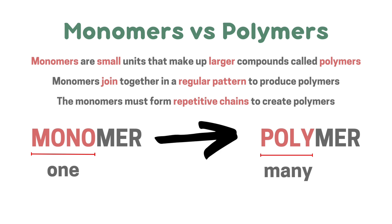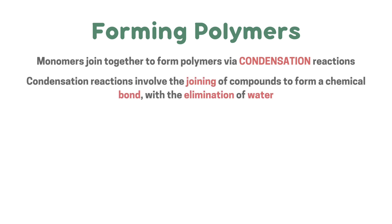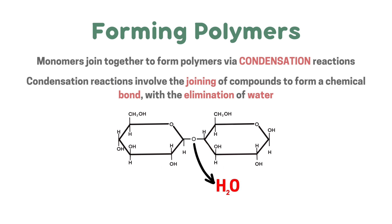Getting from monomers to polymers is called a polymerization reaction. Monomers join together to form polymers via condensation reactions, which involve the joining of compounds to form a chemical bond with the elimination of water. For example, two glucose molecules each have an OH group, and these OH groups combine to create a bond, producing water in the process.